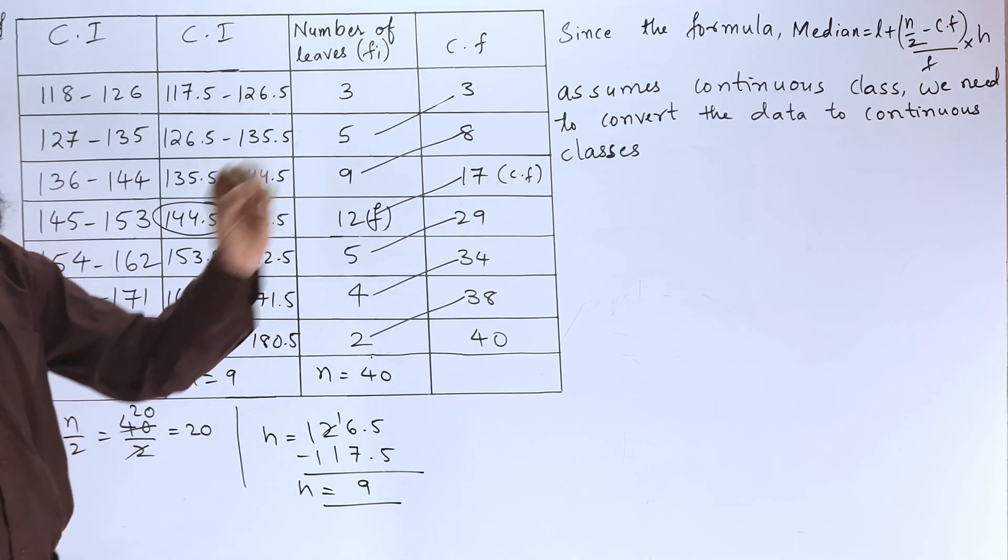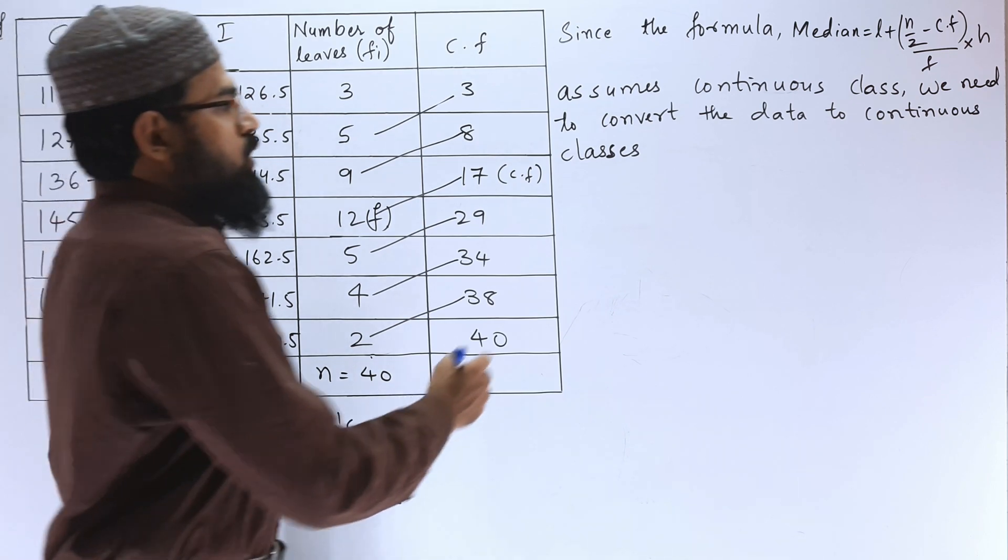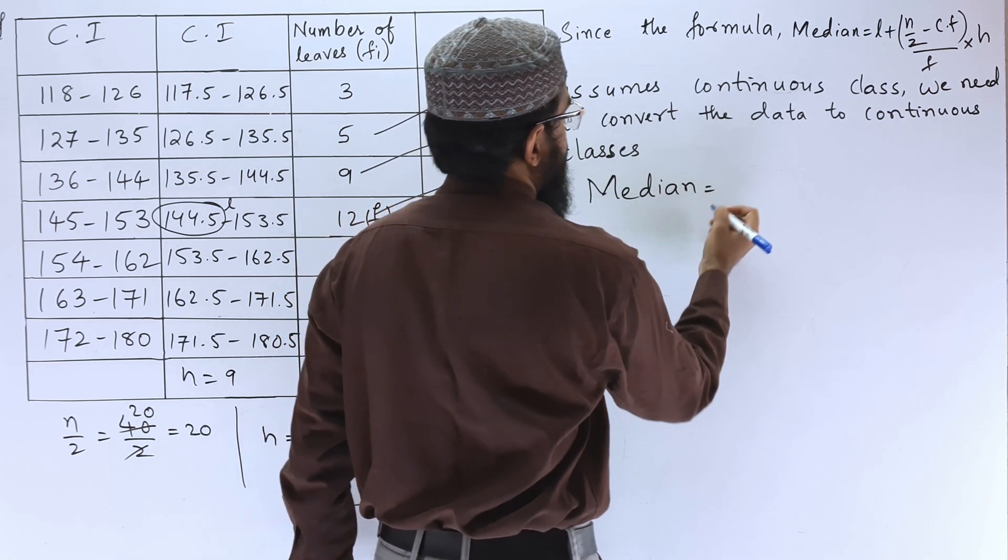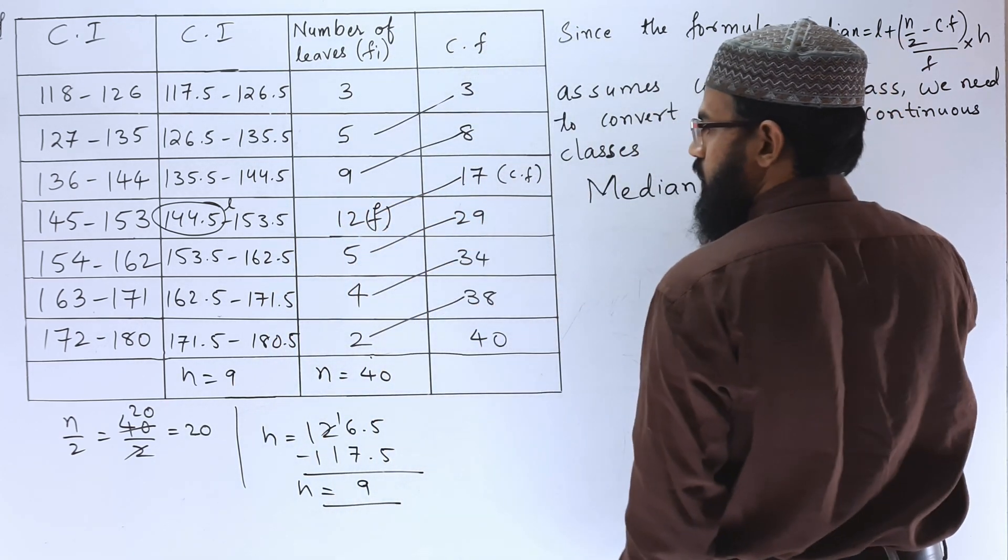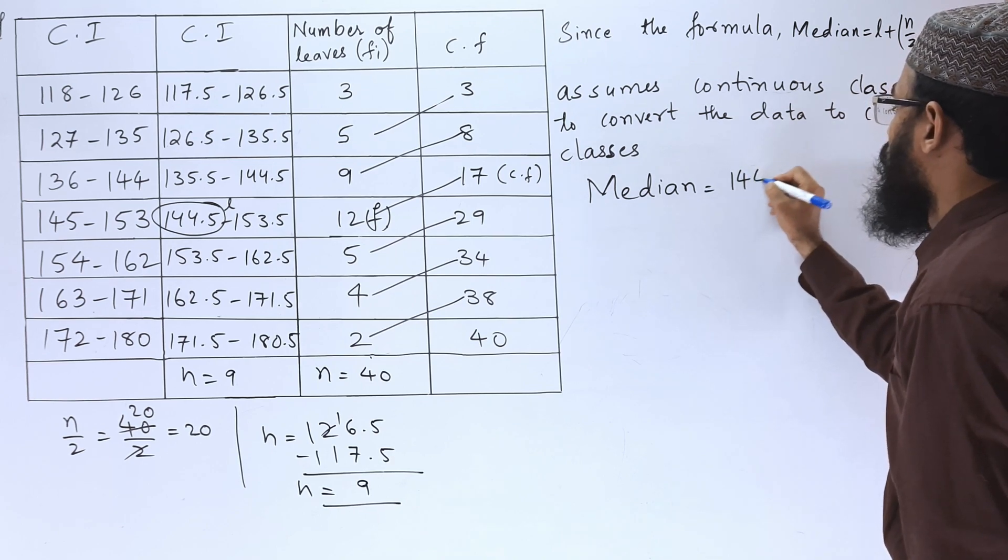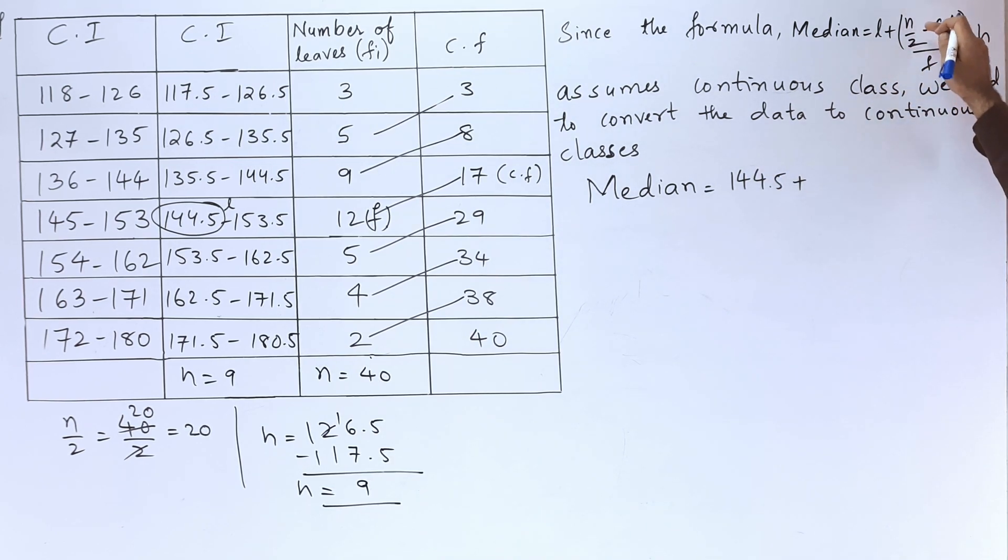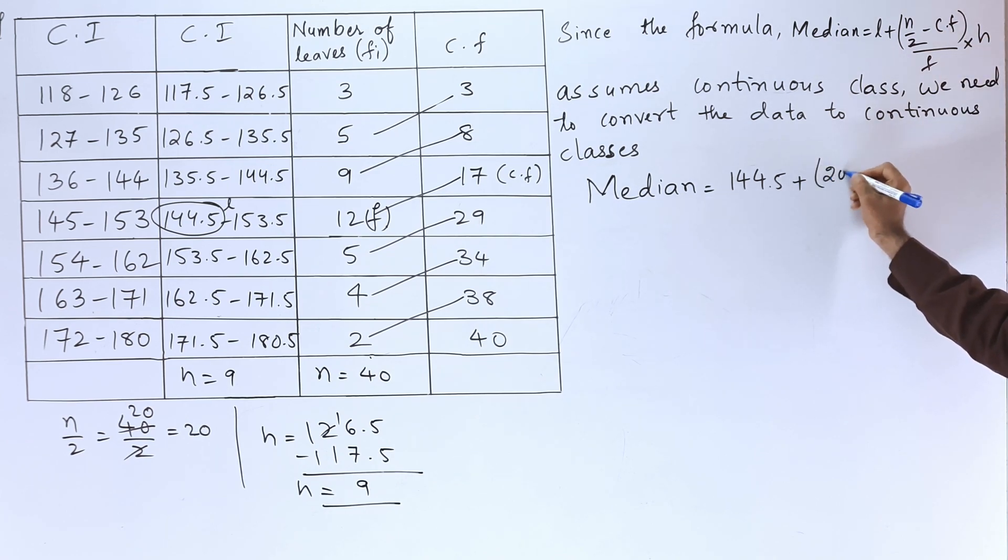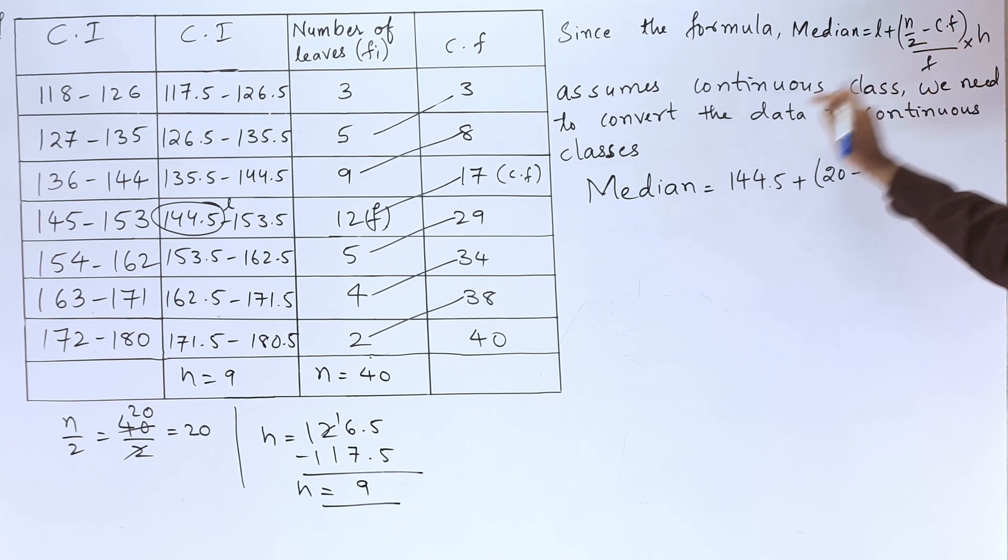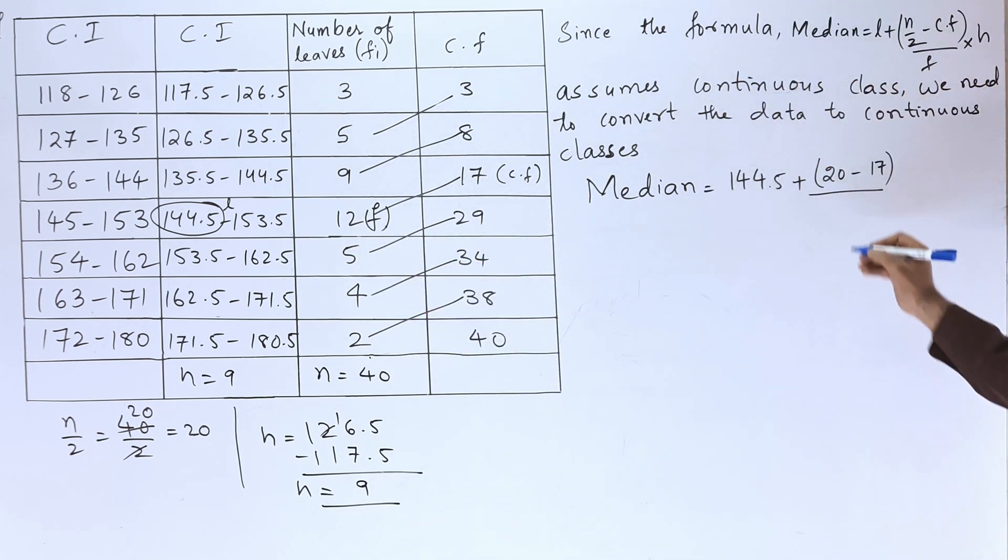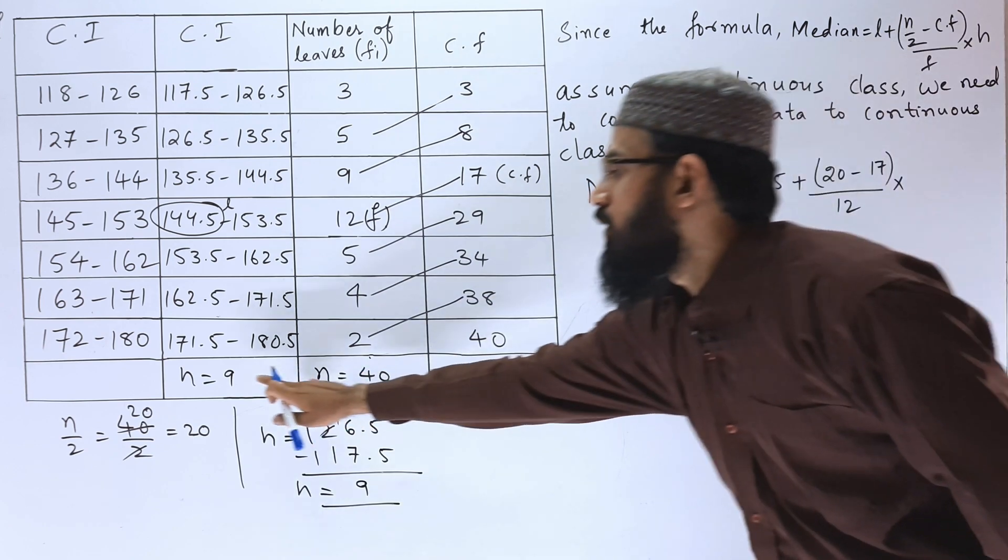Let us substitute all these values in the formula. Median is equals to L, so what is L? L is 144.5 plus N by 2, N by 2 is 20 minus Cf, Cf is 17 by F, F is 12 into H, H is 9.